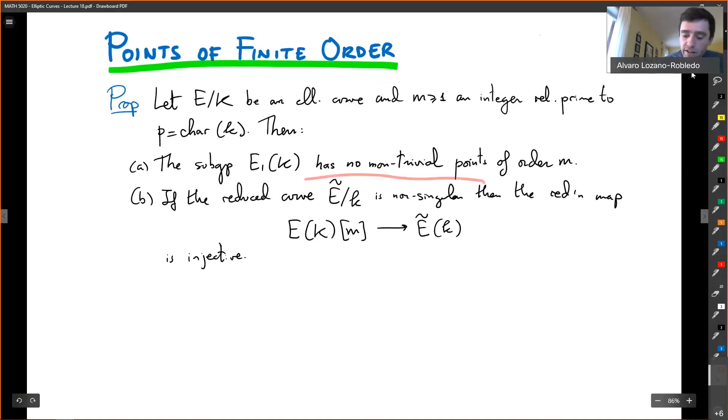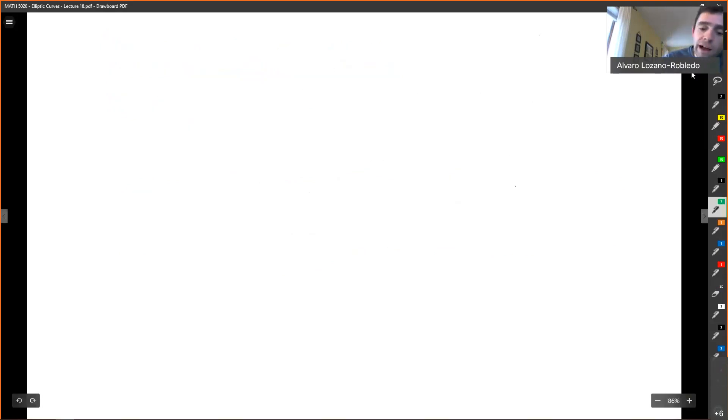So what I'm really interested in is this piece, that the m-torsion embeds in the finite field, or over the residue field, when the elliptic curve is non-singular and when m is prime to the characteristic where you are. So here is an example of how this is used. So we are going to, even though this is an example about, or that statement is about local fields, we want to apply this to elliptic curves over Q. So I'm going to take an elliptic curve over Q that is going to be y squared equals x cubed plus three.